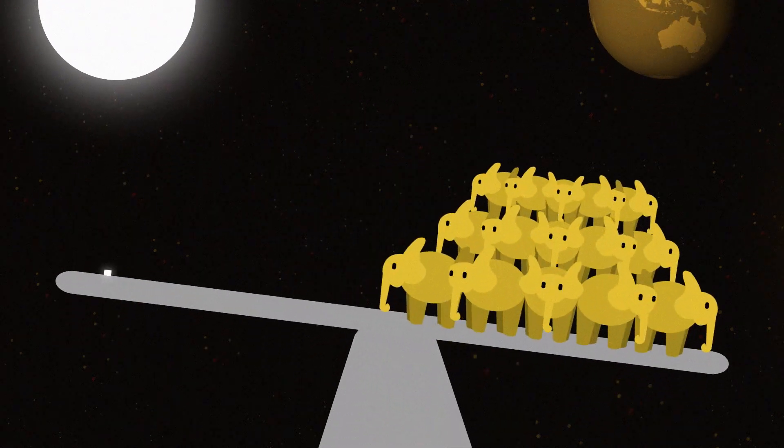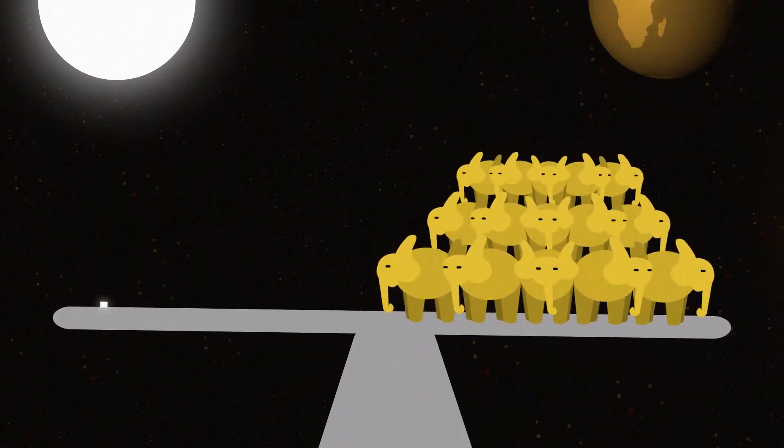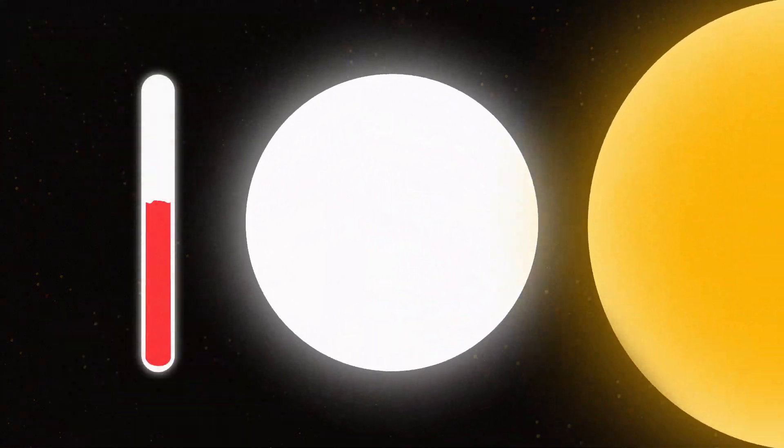A matchbox of matter from a white dwarf would weigh about the same as 15 elephants. Forty times hotter than our sun, they are among the hottest objects in the universe.